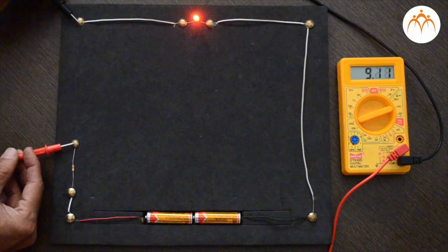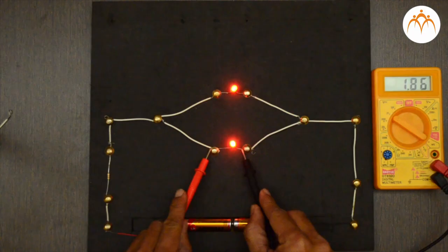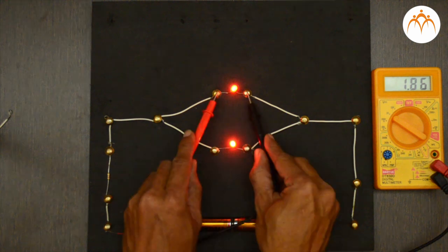With potential difference of 1.1 volt and current of 9.1 milliampere, can you find the value of resistor using Ohm's law? Same exercise can be repeated with LEDs connected in parallel. Potential difference across each LED is 1.8 volt and it is same.